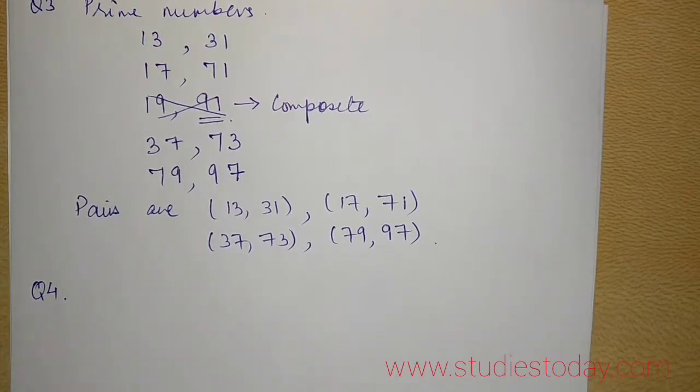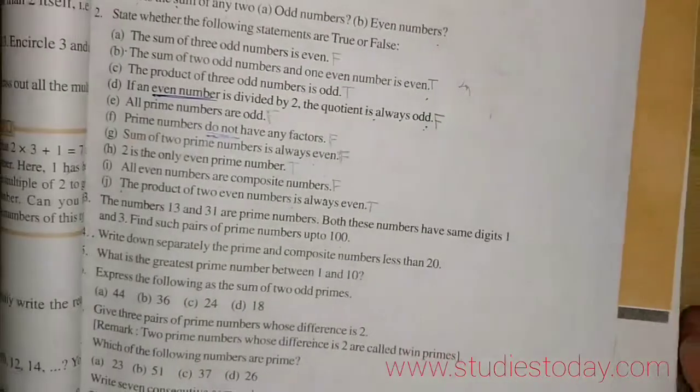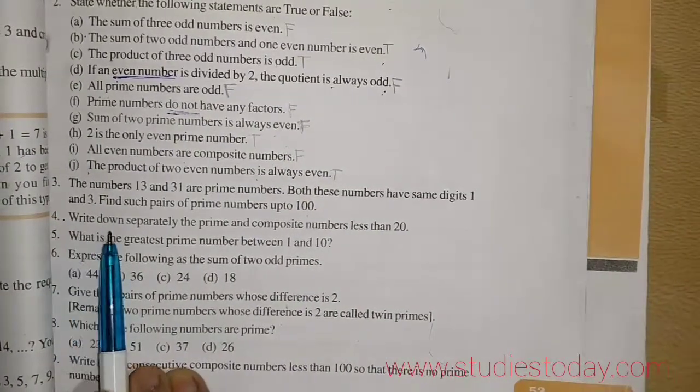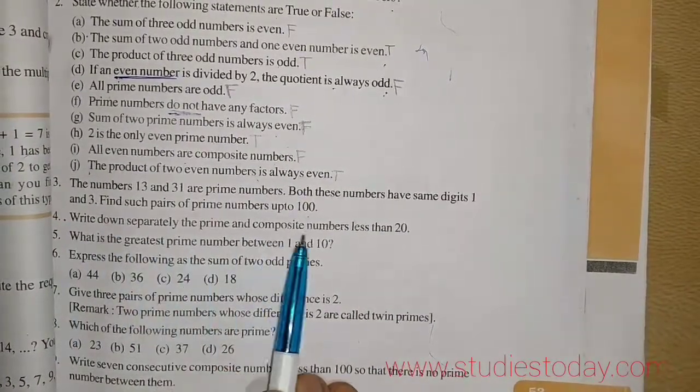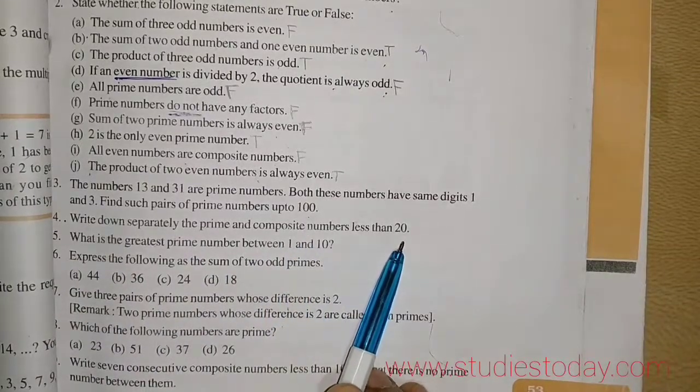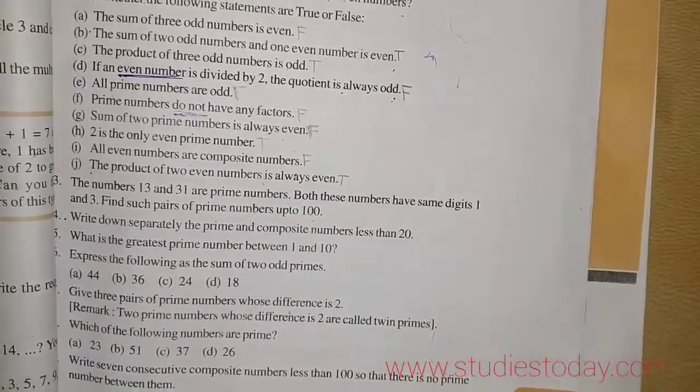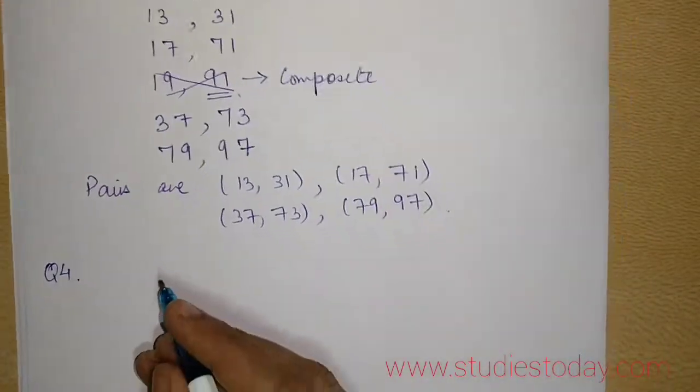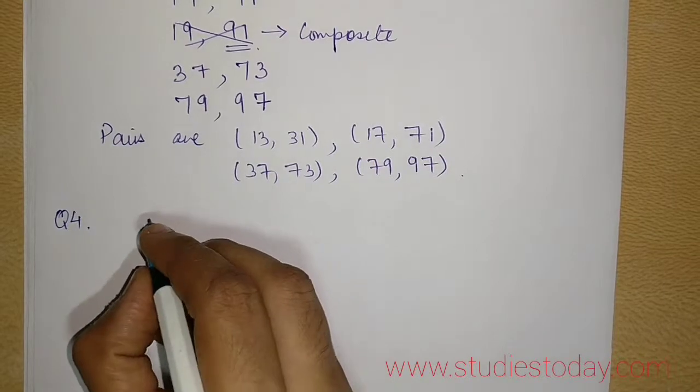Now we go to question number 4 which is here. It says write down separately the prime and the composite number less than 20. The best way to write it in one go is you make it in a tabular form.